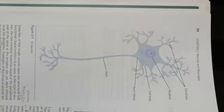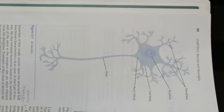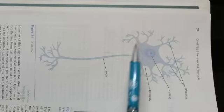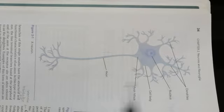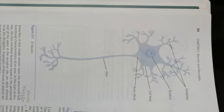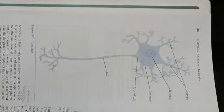A neuron is a specialized cell of the nervous system and it resides mostly in the central nervous system. The cell bodies of neurons in the peripheral nervous system make the ganglia.